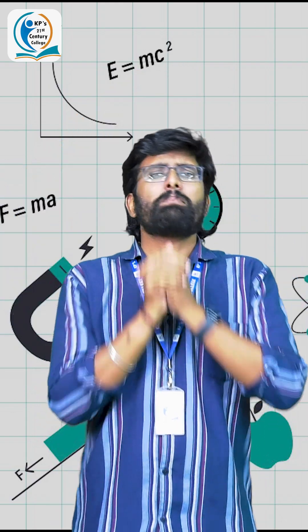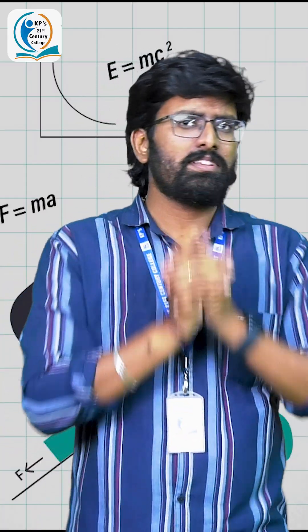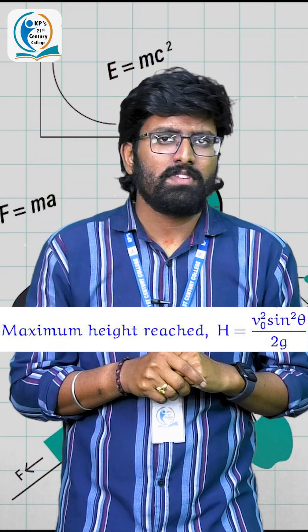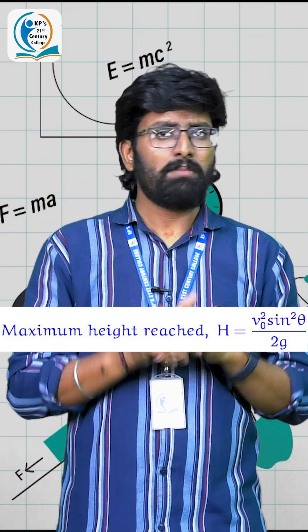One, maximum range. Second, maximum height. So when a batsman hits the ball with some angle, by substituting these values in the formula such as, for maximum height, u square sine square theta by 2g.